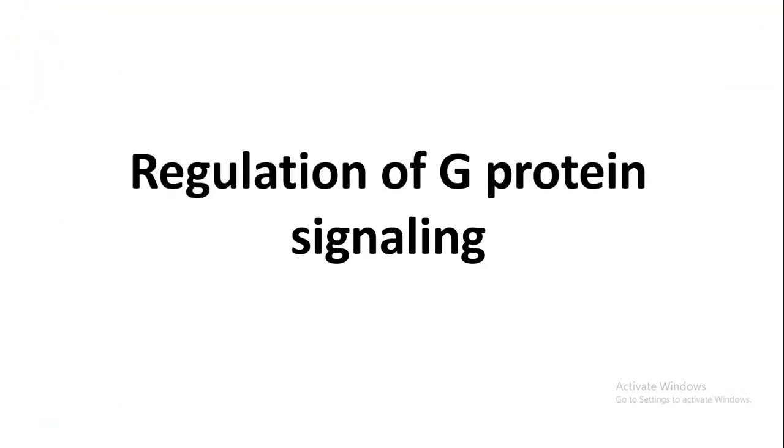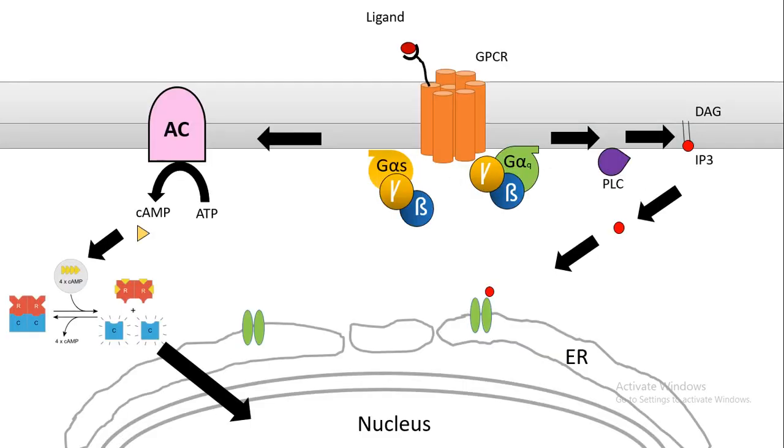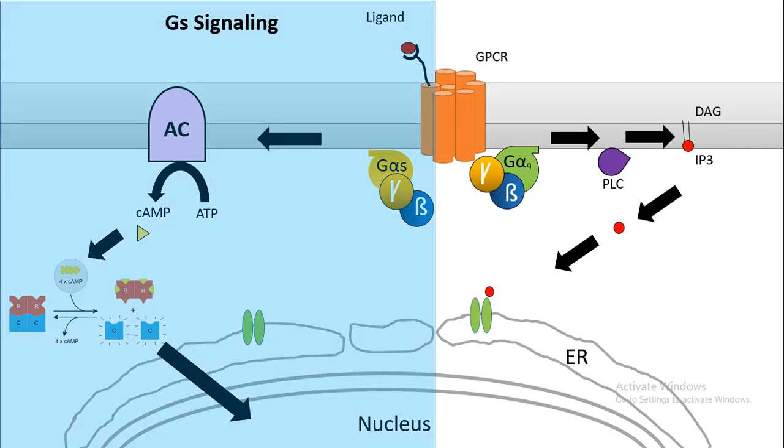Hi, in this video I will talk about regulation of G protein signaling. Here is an overview of G protein signaling. G protein signaling could be of different kinds, for example GS signaling. In GS signaling, the trimeric G protein in the alpha subunit of the trimeric G protein gets dissociated from the GPCR upon ligand binding.